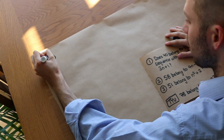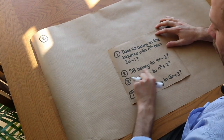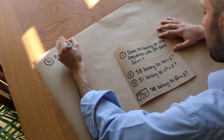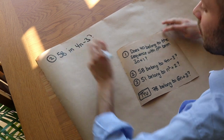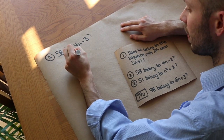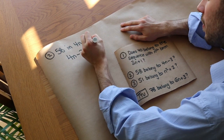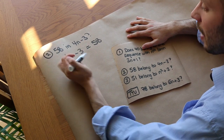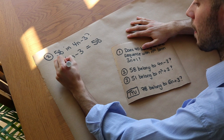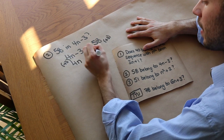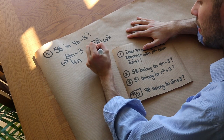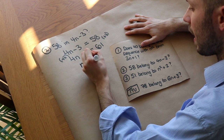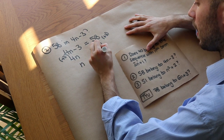Next: does 58 belong to the sequence with nth term 4n minus 3? We set 4n minus 3 equal to 58. We add 3 to both sides to eliminate the minus 3, giving us 4n equals 61. Then dividing both sides by 4, we get n equals 15.25.